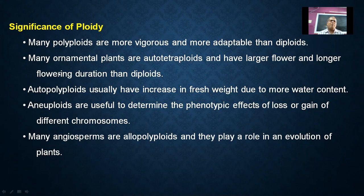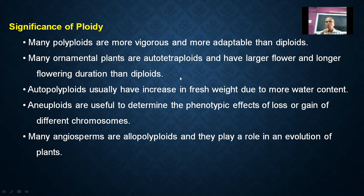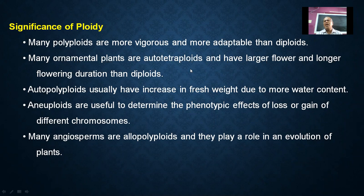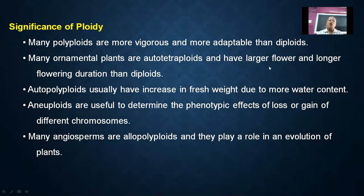Many ornamental plants are autotetraploids and have larger flowers and longer flowering duration than diploids. An autotetraploid comes from the same species with its chromosome number doubled, giving four sets of chromosomes instead of the normal two sets. In ornamental plants especially, autotetraploids are mostly tetraploid and have larger flowers and longer flowering duration than diploids.